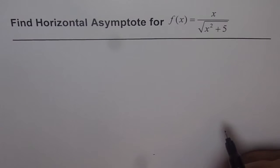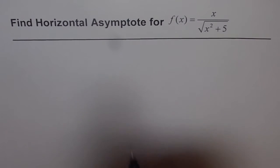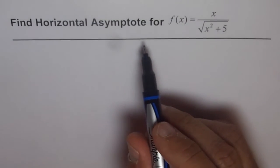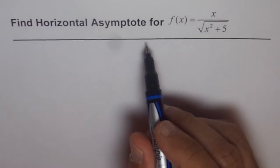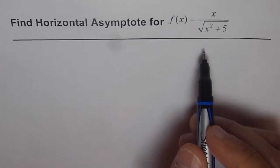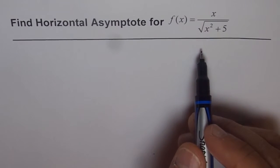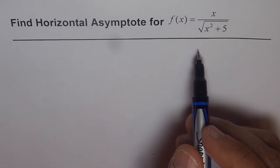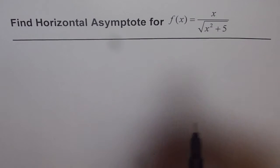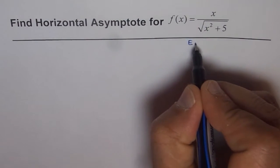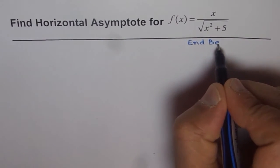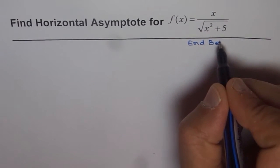Let's first understand what a horizontal asymptote is. When we say horizontal asymptote, we are basically trying to figure out the behavior of the function as x approaches positive infinity or negative infinity. It's kind of end behavior — that is what our objective is.